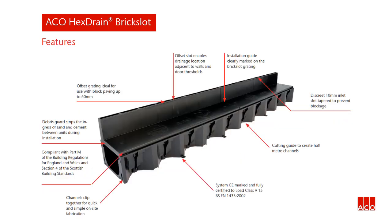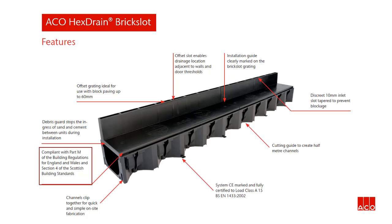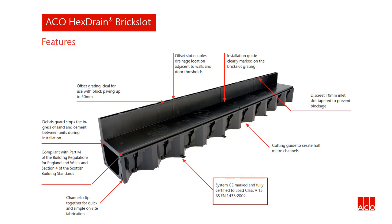Using the same channel body as Hex Drain, Hex Drain Brick Slot has lots of similar benefits. Supplied in one metre lengths, it can easily be cut to size, and a full range of accessories are available. The key features of Hex Drain Brick Slot are an offset brick slot grating ideal for use with block paving up to 60mm; the offset slot enables drainage location adjacent to walls and door thresholds; and the discreet 10mm inlet slot is tapered to help prevent blockages. It's compliant with Part M of the building regulations for England and Wales and Section 4 of the Scottish building standards. There's a debris guard which stops the ingress of sand and cement during installation. Certified and CE marked to load class A15.